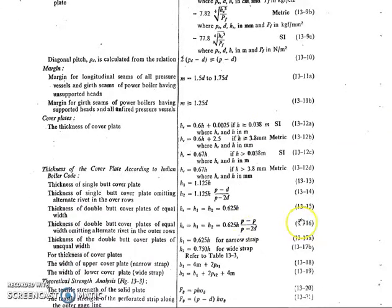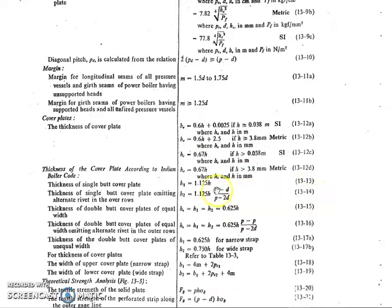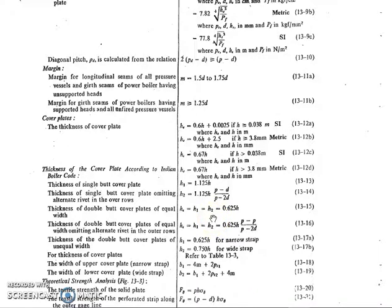We also need to find the thickness of the cover plate. The thickness is given by: hc = 0.66 + 0.0025h when h is greater than 0.038 m (equation 13.13). For a single butt cover plate, hc = 1.125h. For a double butt cover plate, hc = h1 = h2 = 0.625h.